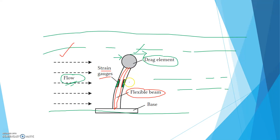There are no hard concepts here — no quantum mechanics, no Schrödinger's equation. It is a simple structure explained by basic physics: the drag element moves in the direction of liquid flow, producing force, which causes a change in resistance in the strain gauge, since the basic principle of the strain gauge is that resistance changes whenever force is applied. This is how, apart from the Pitot tube or Venturi meter, we can also measure the flow rate of a liquid using the concept of the strain gauge.